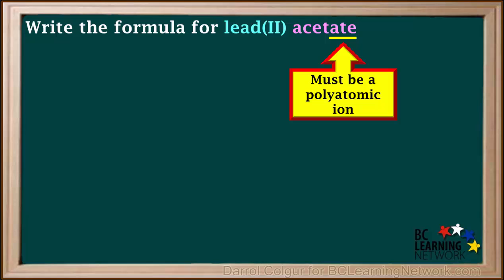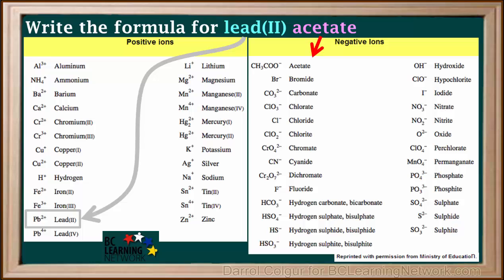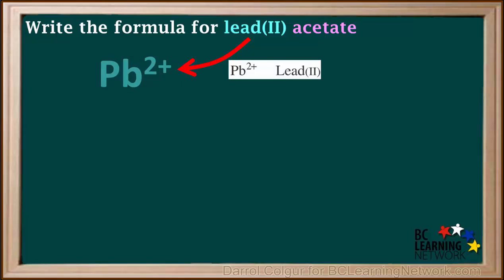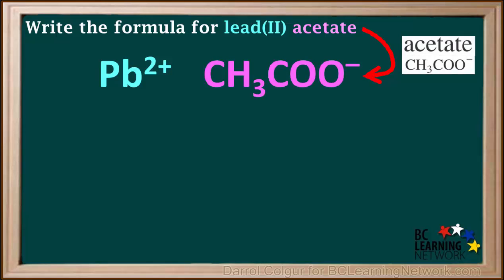Because acetate ends in -ate, it must be a polyatomic ion. Acetate is CH3COO with a negative charge. So lead, Roman numeral II, is Pb2+, and acetate is CH3COO-.